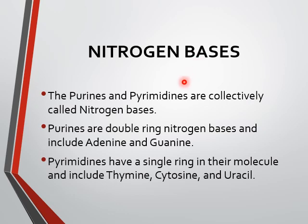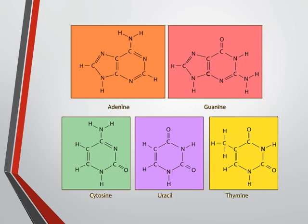Nitrogen bases. There are two types of nitrogen bases: purines and pyrimidines. Purines are double-ring nitrogen bases and they include adenine and guanine — so two purines. Pyrimidines have a single ring in the molecule and they include thymine, cytosine, and uracil — so three pyrimidines and two purines. Here you can see the structure of adenine and guanine with a double ring, whereas cytosine, uracil, and thymine are single-ring compounds.